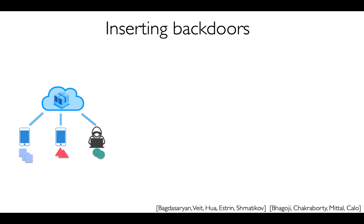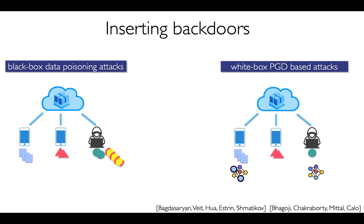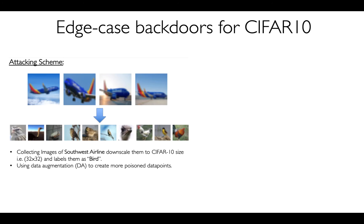There are basically two ways to insert edge case backdoors. One is by what we call a black box attack, where the adversary replaces their local dataset with one of their choice. The second way is to insert a backdoor through a PGD-based approach, where the adversary perturbs the weights of the model by epsilon so that the perturbation allows the model to mispredict on the backdoor subtask, and the effect of the backdoor is small with regards to norm difference metrics. This second goal is important in order to make these attacks hard to filter. The goal of either technique is to insert effective, persistent, and hard-to-detect backdoors.